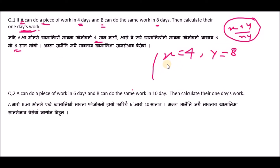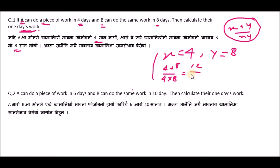We can count x plus y: 4 plus 8 divided by 4 into 8. So 4 plus 8 equals 12, and 4 into 8 equals 32.